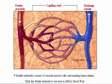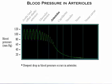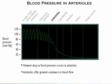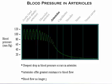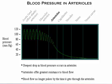In the graph of blood pressure throughout the circulation, note that the steepest drop in blood pressure occurs in the arterioles, which offer the greatest resistance to blood flow. Note also that blood flow no longer pulses by the time it goes through the arterioles.